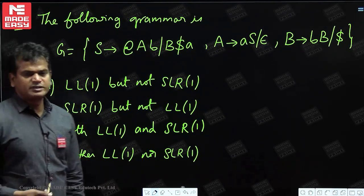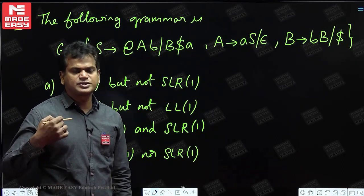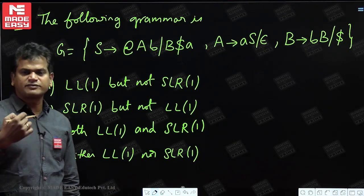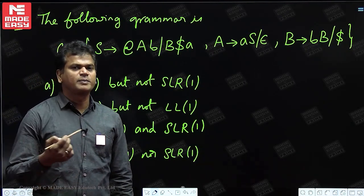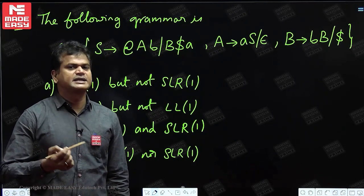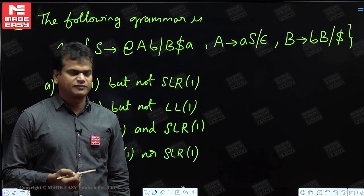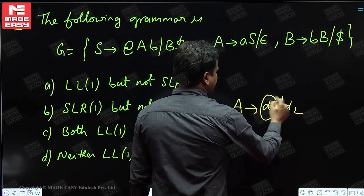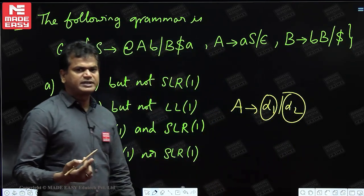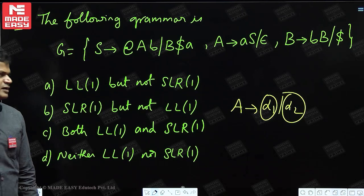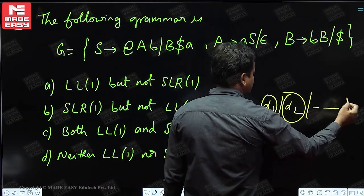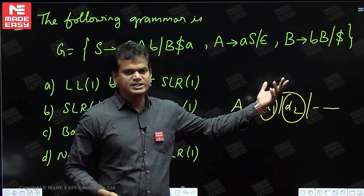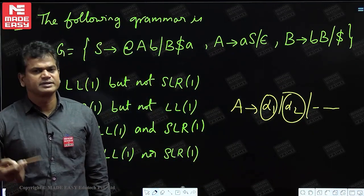For LL(1), any non-terminal having two or more productions — find the first of each production. If the first sets of any two productions of the same non-terminal have common elements, then it is not LL(1). For LL(1), if a non-terminal has two productions alpha-1 and alpha-2, find first of alpha-1 and first of alpha-2. If they have common elements, then it is not LL(1). If there are more than two productions and first of any two productions have common elements, then also not LL(1).